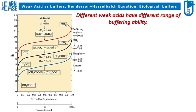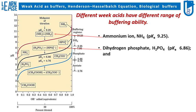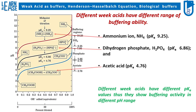Ammonium ion, NH4+, has a pKa value of 9.25. Dihydrogen phosphate, H2PO4-, has a pKa value of 6.86, and acetic acid, CH3COOH, has a pKa value of 4.76. The pKa values of all three weak acids are described in the image on the left. Different weak acids have different pKa values, and thus they show buffering activity in different pH ranges.